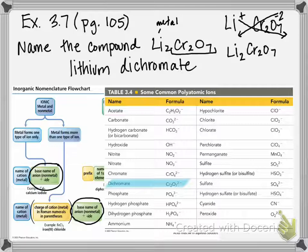So the biggest thing with this type of naming is to be able to recognize a polyatomic ion. I've seen a lot of students over the years name this as lithium chromium oxide. That's incorrect. Cr₂O₇ is the dichromate polyatomic ion. So whenever you have a polyatomic ion, you need to be able to recognize this so that you can name your ionic compound correctly.